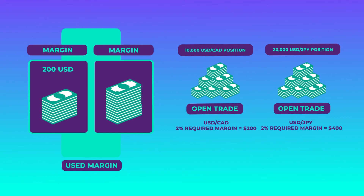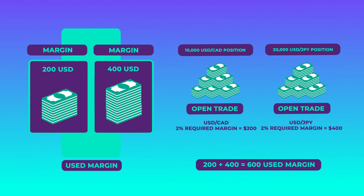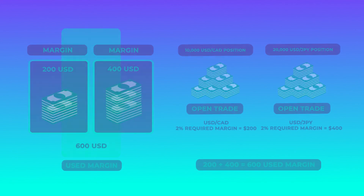your margin will be 400 USD. Now your account holds a 200 USD margin for your USD/CAD position and a 400 USD margin for your USD/JPY position. Adding them both up gives you your used margin — in other words, your used margin is 600 USD, and that's the total amount you would need to maintain all your open positions. And that's how simple used margin is.